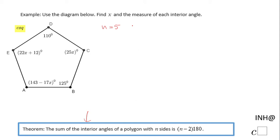So the sum of the interior angles will be 5 minus 2 times 180, which means 3 times 180, which means 540 degrees. The sum of the interior angles of this polygon is 540 degrees.